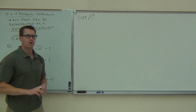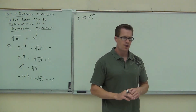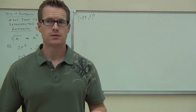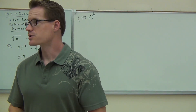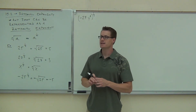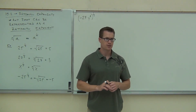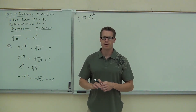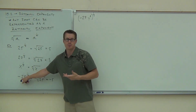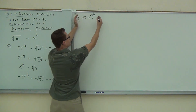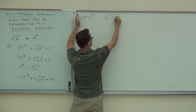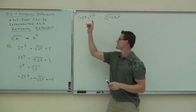Let's try: negative 27 y to the sixth, all to the one-third power. We have a fractional exponent, so we have a radical. The denominator is three, so it's a cube root. Is the negative inside the cube root or outside? Because the negative 27 and y to the sixth are all inside the parentheses with the exponent applied to all of it, the negative is inside the radical. So it's the cube root of negative 27 y to the sixth.